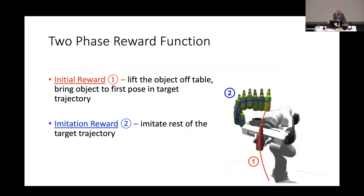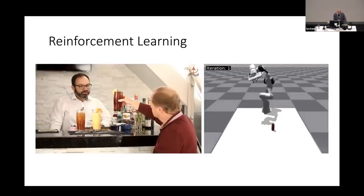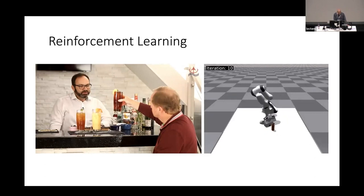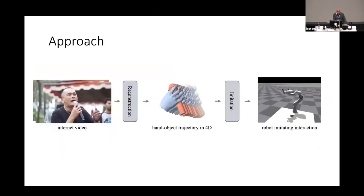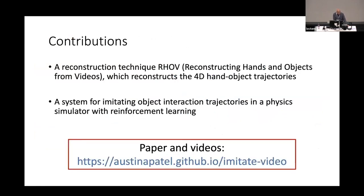The reward functions have phases: lift the object off the table, bring the object to the first pose, then imitate the rest of the trajectory. The rewards are basically some kind of difference in orientation between the object position when manipulated by the robot versus what the human did. We have results — a separate task is solved for each of the hundred-or-so different things. This needs to be scaled to many videos; we need real-world experiments beyond our one basic example, and there should be one policy for all videos. This paper is available online.